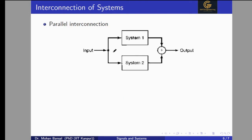Now, parallel interconnection. In parallel interconnection, System 1 and System 2 are connected in parallel. Both systems receive the same input, and their outputs are added together. The output of System 1 is Y1 and the output of System 2 is Y2. They are added, so we get Y = Y1 + Y2.